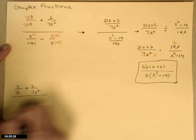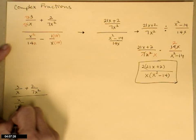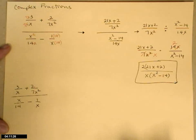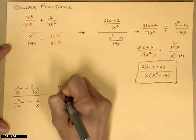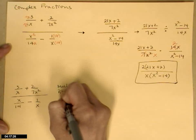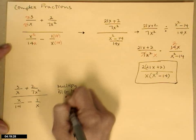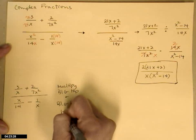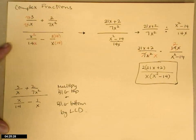So we'll go with our same starting rational expression. The way I do this is I'm going to multiply what I call the big top and the big bottom by the LCD.